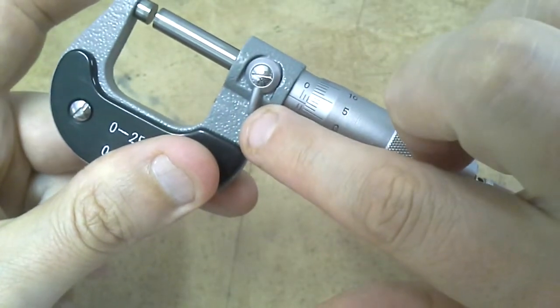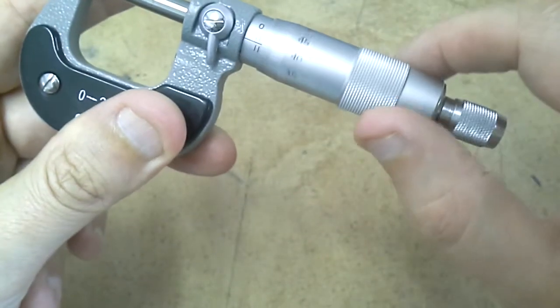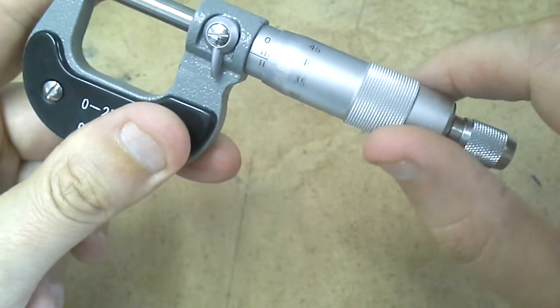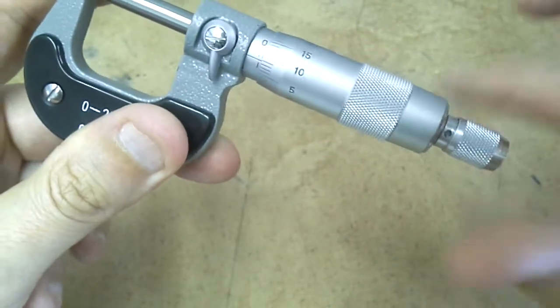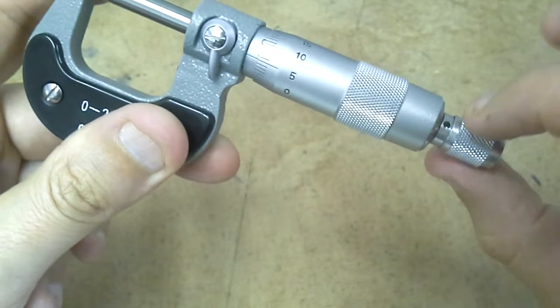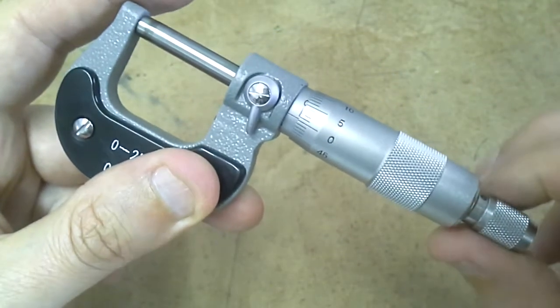we've got a lock here, this part here is called the thimble and this part here is called the ratchet and if I screw it in here it starts to click.